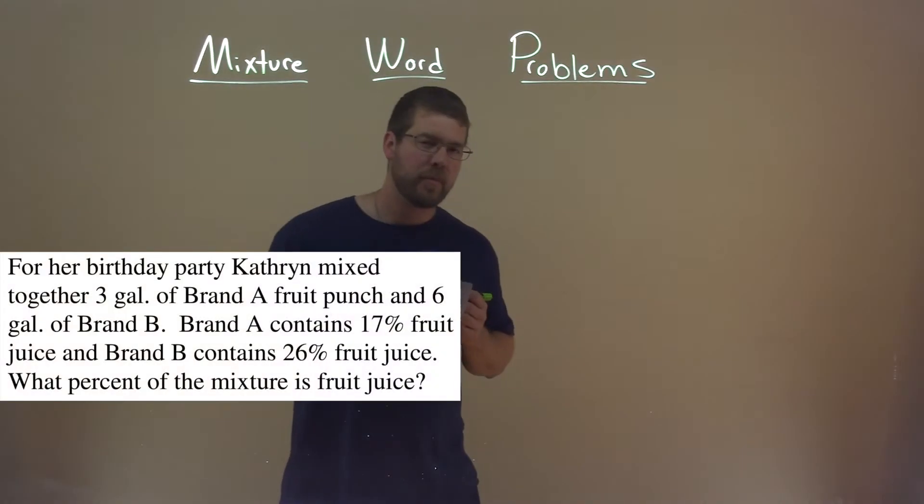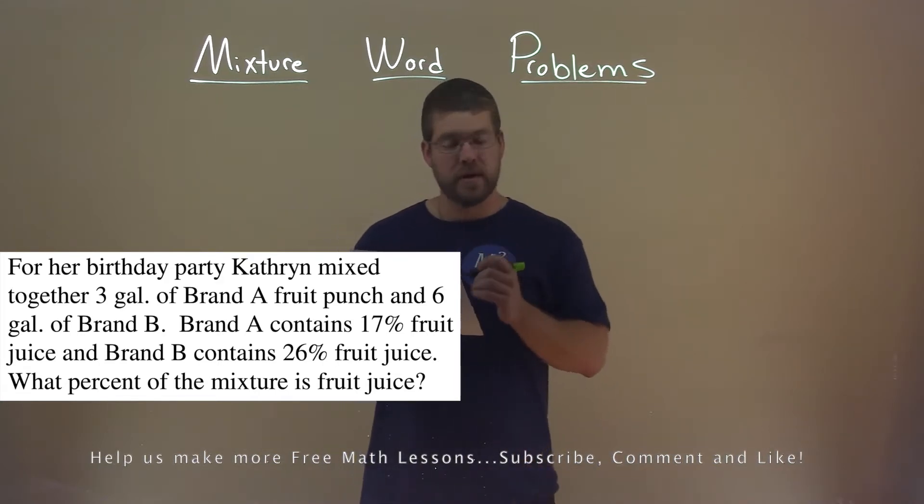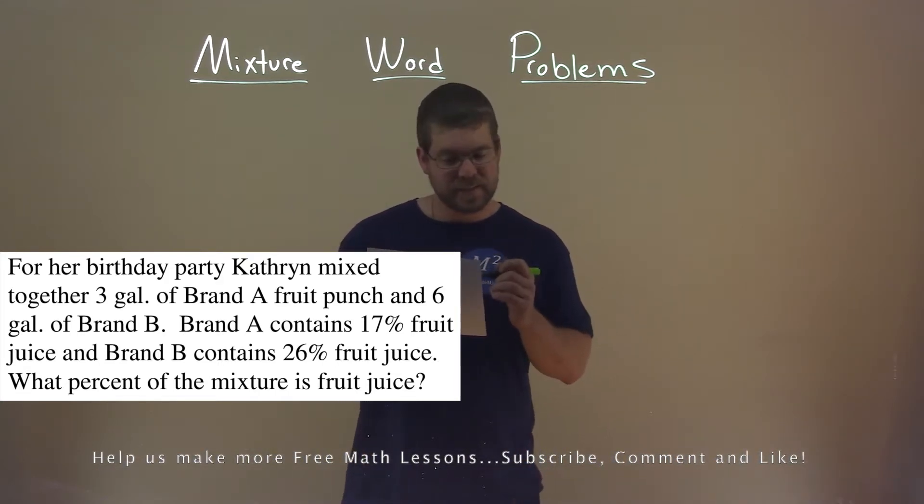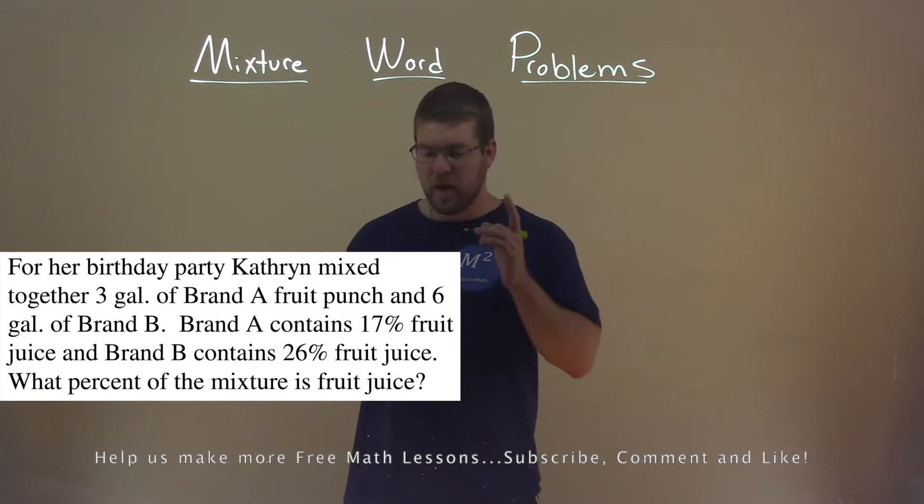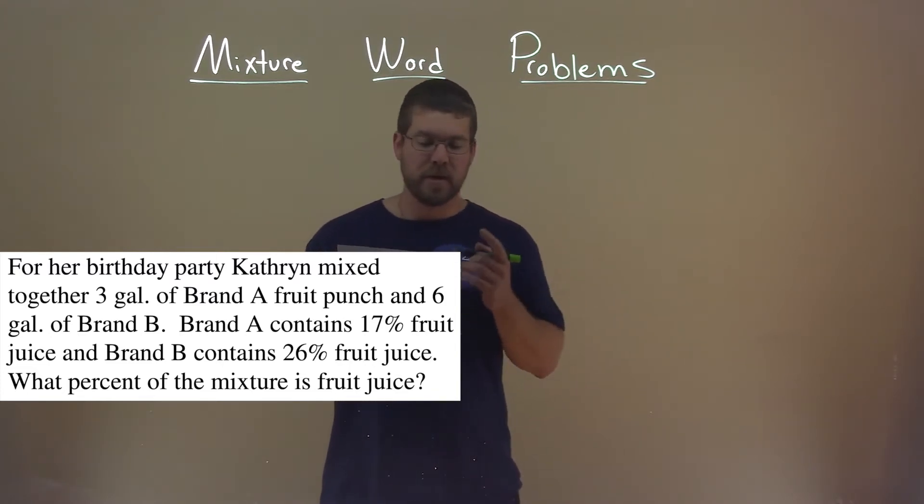We're given this problem right here. For her birthday party, Catherine mixed together three gallons of brand A fruit punch and six gallons of brand B. Brand A contains 17% fruit juice, and brand B contains 26% fruit juice. What percent of the mixture is fruit juice?